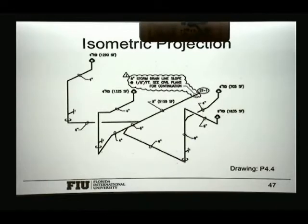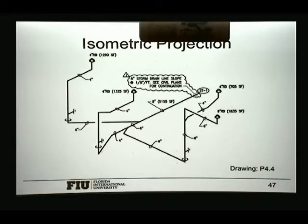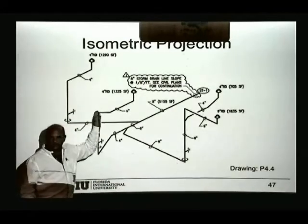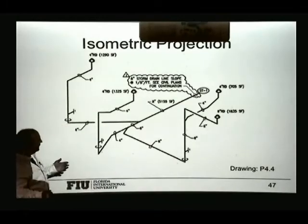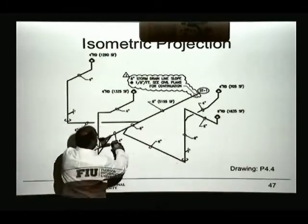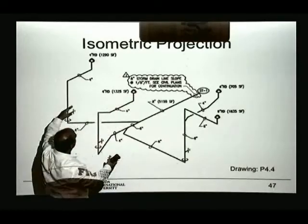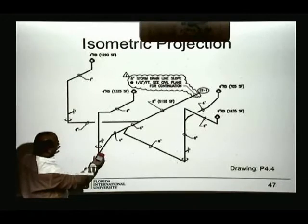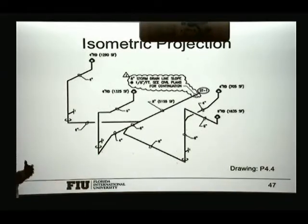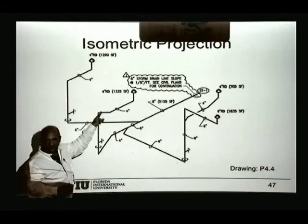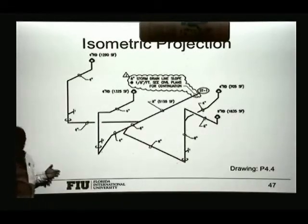We may have isometric drawings where we have a representation of a plumbing system. It looks very confusing until you start understanding what it really is. If you see horizontal lines, they are on the horizontal plane. If you see vertical lines, it means they're changing elevation. So you can start thinking: this is on the floor, this may be on the floor, and then we're going up to the roof for venting. It's not to scale — it's just to represent where the different items are and to show changes in elevation that are very difficult to see from the plan layer.